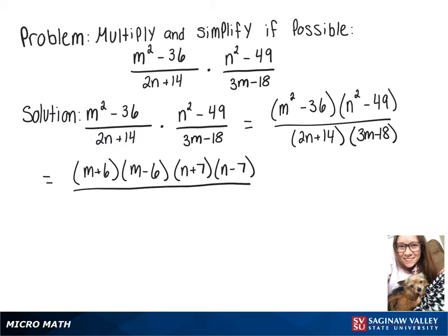On the bottom, we can factor a 2 out of that 2n plus 14, which leaves n plus 7 in parentheses. And we can factor a 3 out of that 3m minus 18, so we'll bring that out front, and that leaves m minus 6 in parentheses.